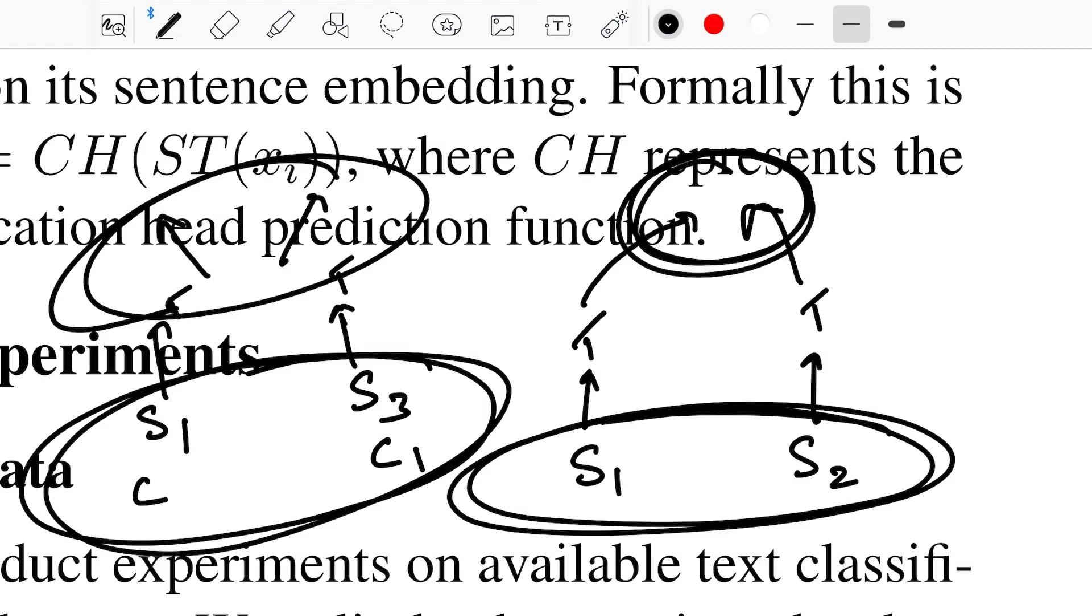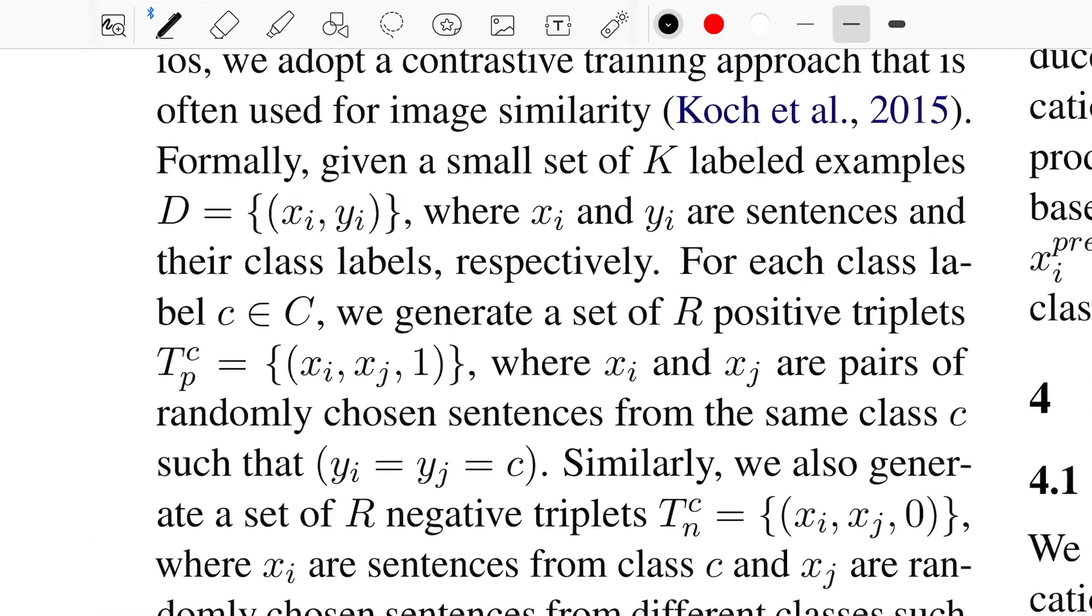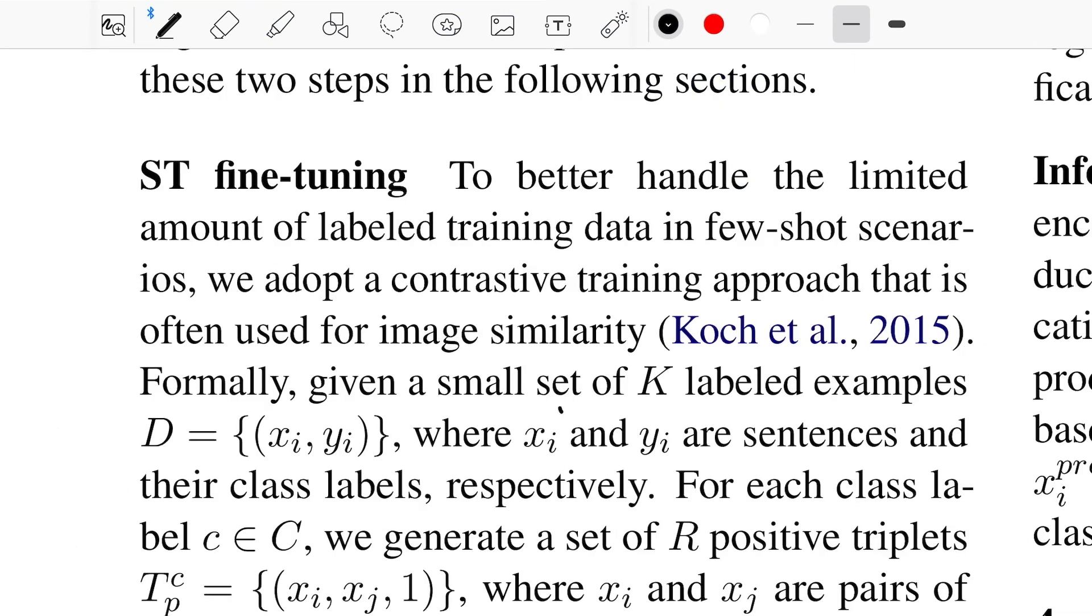What they do here is: let's say we have K labeled samples in total, where D is the dataset, where xi and yi are sentences and class labels. You have positive triplets where this is the notation for a positive triplet for class C, where xi and xj are sentences from the same class. That's why you have a label of 1.